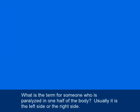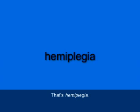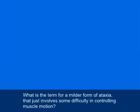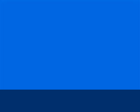What is the term for someone who's paralyzed in one half of the body — usually the left side or the right side? That's hemiplegia, H-E-M-I-P-L-E-G-I-A. What is the term for a milder form of ataxia that just involves some difficulty in controlling muscle motion? That's dystaxia, D-Y-S-T-A-X-I-A.